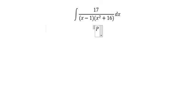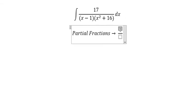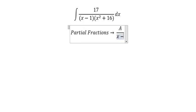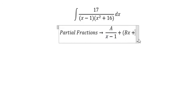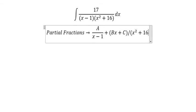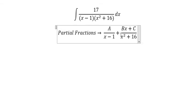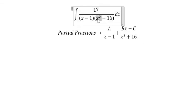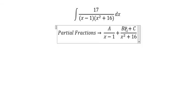We need to use partial fractions. So we put capital A over x minus 1 and we have Bx plus C over x square plus 16. Because this is power 2, so on numerator there should be power number 1.